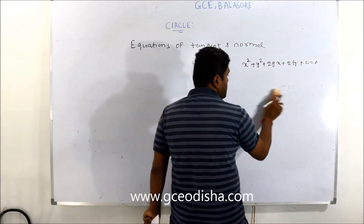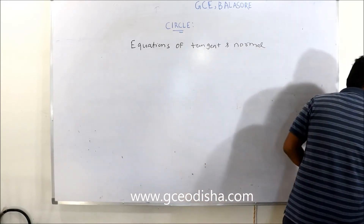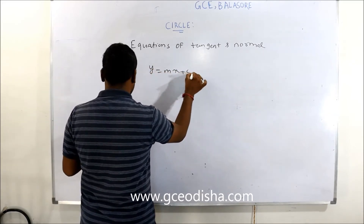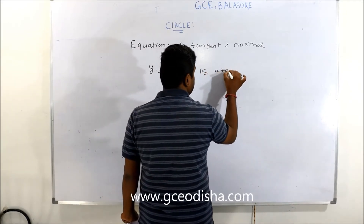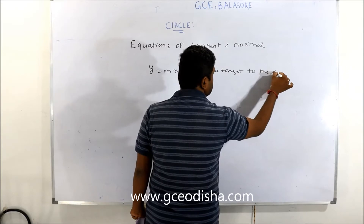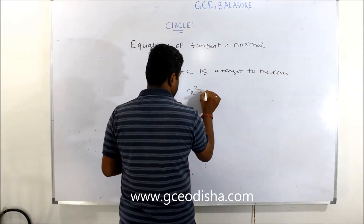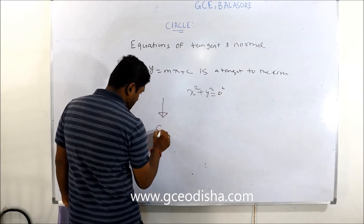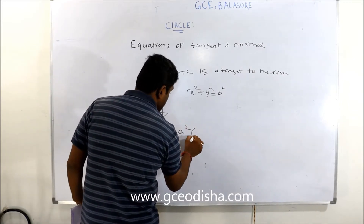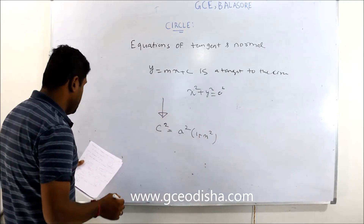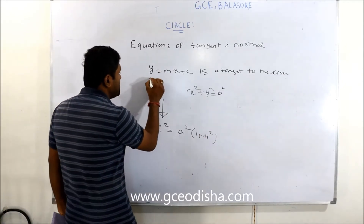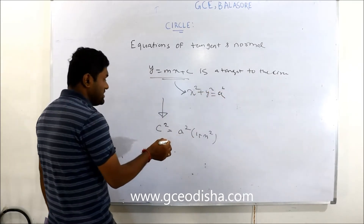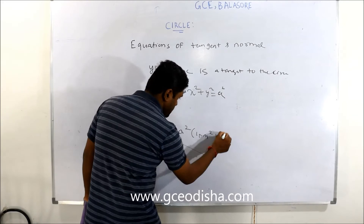I am giving some tricks related to tangent to a circle. If the line y = mx + c is a tangent to the circle x² + y² = a², then the condition is c² = a²(1 + m²). This is the equation of the tangent. Just remember this formula — you'll see this type of question frequently.